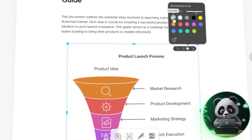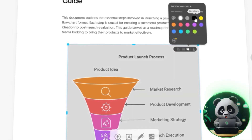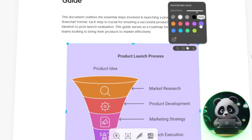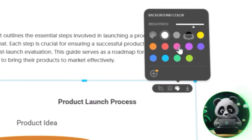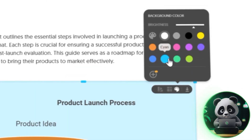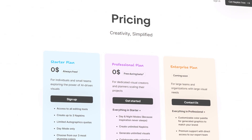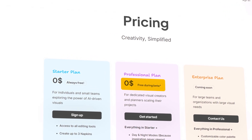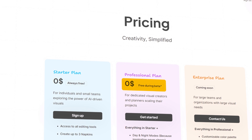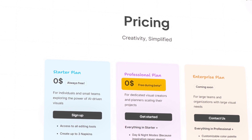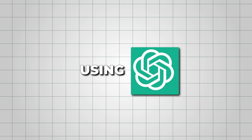What I love about Napkin AI is how simple it is for a beginner to use, but also packed with features that can help professionals jumpstart their creative process. Since it's free in its beta stage, now is the perfect time to try it and see how it fits into your workflow. And for another detailed tutorial to make mind maps using ChatGPT for free, check out this video next.